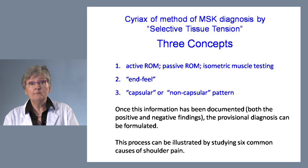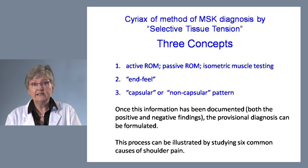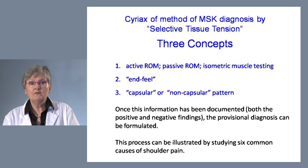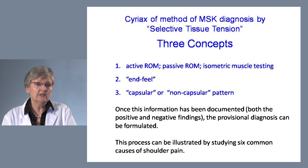There are three concepts needed to make a diagnosis using the selective tissue tension method. First is active range of motion, passive range of motion, and isometric muscle testing. The next is end feel. And the third is capsular or non-capsular pattern. Once this information has been documented — both the positive and the negative findings — the provisional diagnosis can be formulated.